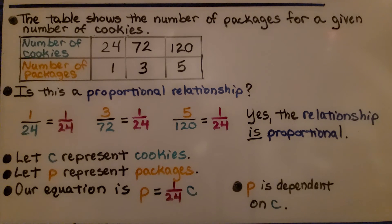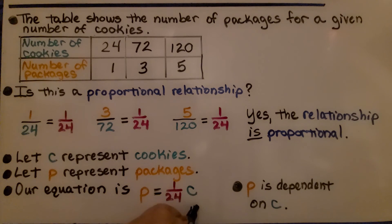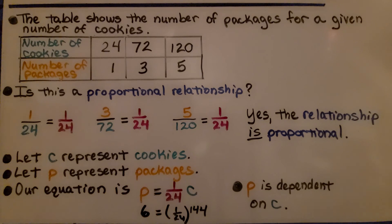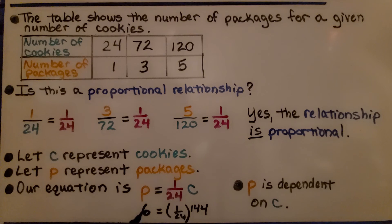For example, if we had 144 cookies and wanted to know how many packages that is, we substitute 144 for c: (1/24) × 144 = 6 packages. The number of packages is dependent on the number of cookies.